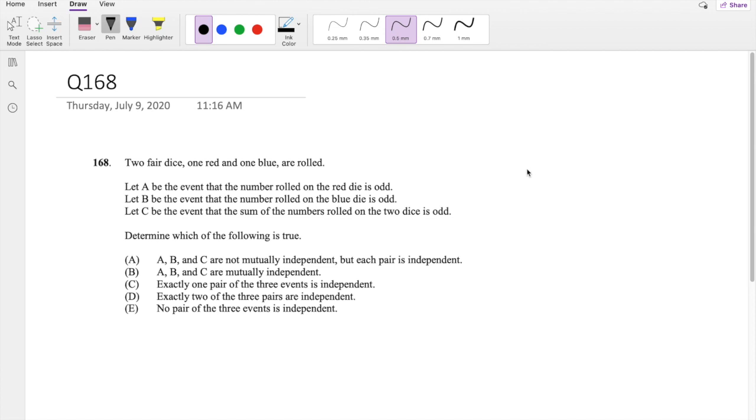Let A be the event that the number rolled on the red die is odd. So this is A: 1, 2, 3, 4, 5, 6. And let this be B: 1, 2, 3, 4, 5, 6. The probability that a number you roll is odd is just 1/2, right? Because you have 1, 3, 5, so 3 out of 6. Likewise, the number on the blue die is still the same.